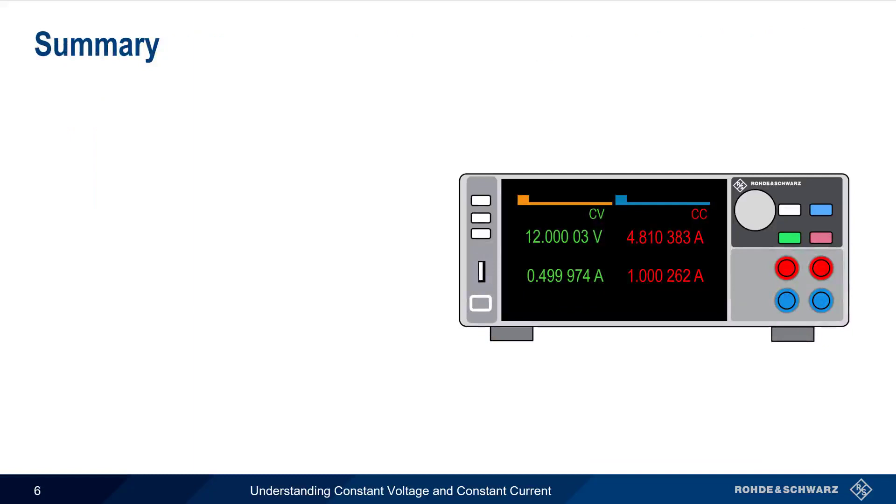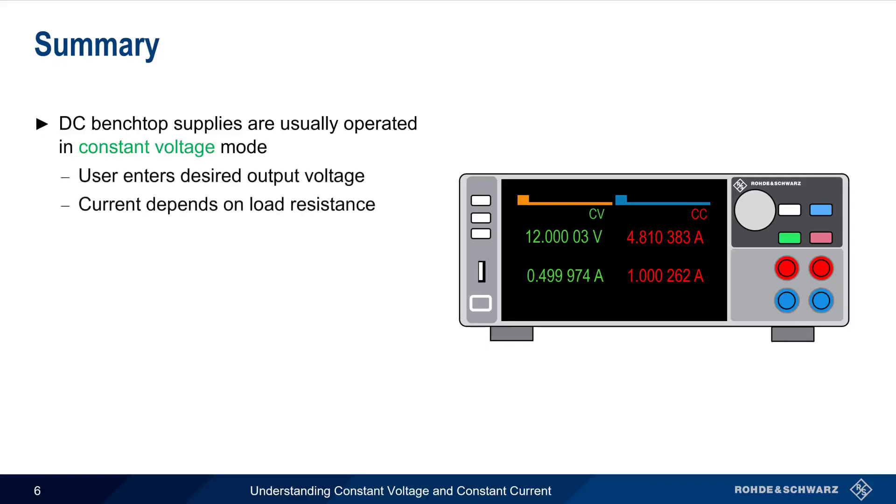Let's end with a brief summary. Most DC Benchtop power supplies are normally operated in constant voltage mode. The user enters the desired output voltage, and the output current depends on the load resistance, as per Ohm's law.